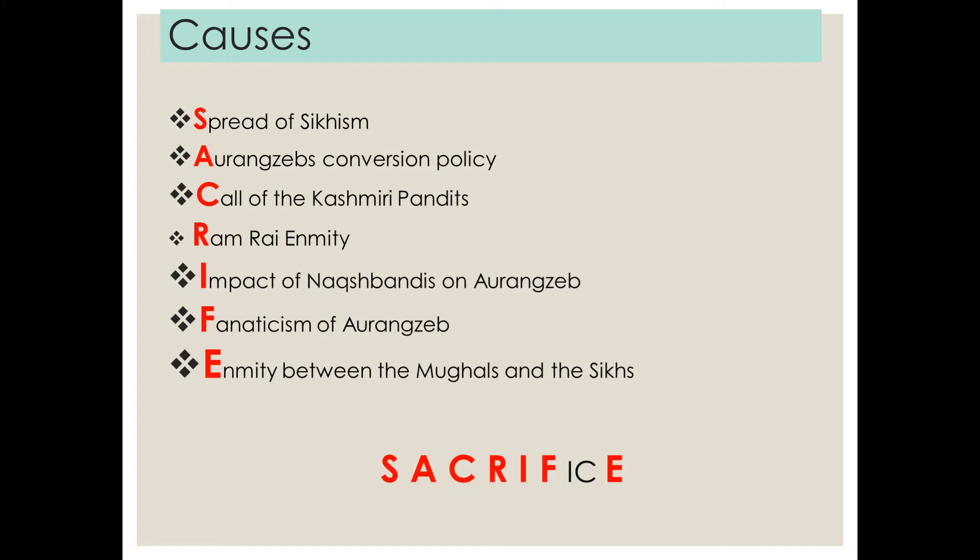SACRIFICE: S — the spread of Sikhism; A — Aurangzeb's conversion policy; C — call of the Kashmiri Pandits; R — Ram Rai's enmity; I — impact of Naqshbandis on Aurangzeb; F — fanaticism of Aurangzeb; E — enmity between Mughal and the Sikh. So these are the six — in fact seven — causes that we will be talking about.